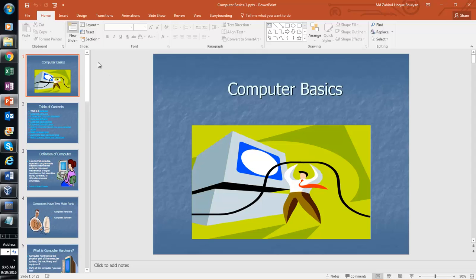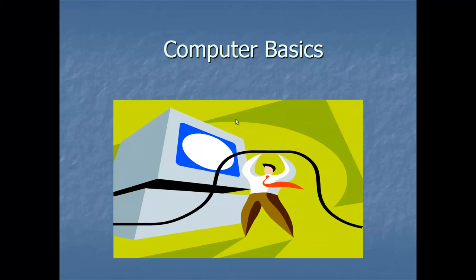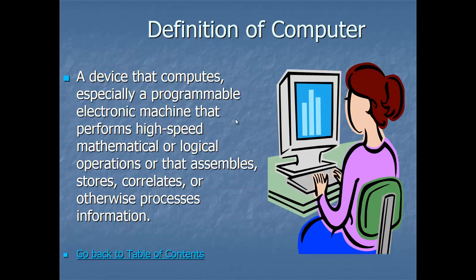Before you start learning QA, it is important to first understand what a computer is. A computer, as defined on screen, is a programmable electronic device that performs high-speed mathematical or logical operations, or that assembles, stores, correlates, or otherwise processes information. Simply put, a computer is a device that does computation — meaning calculation.